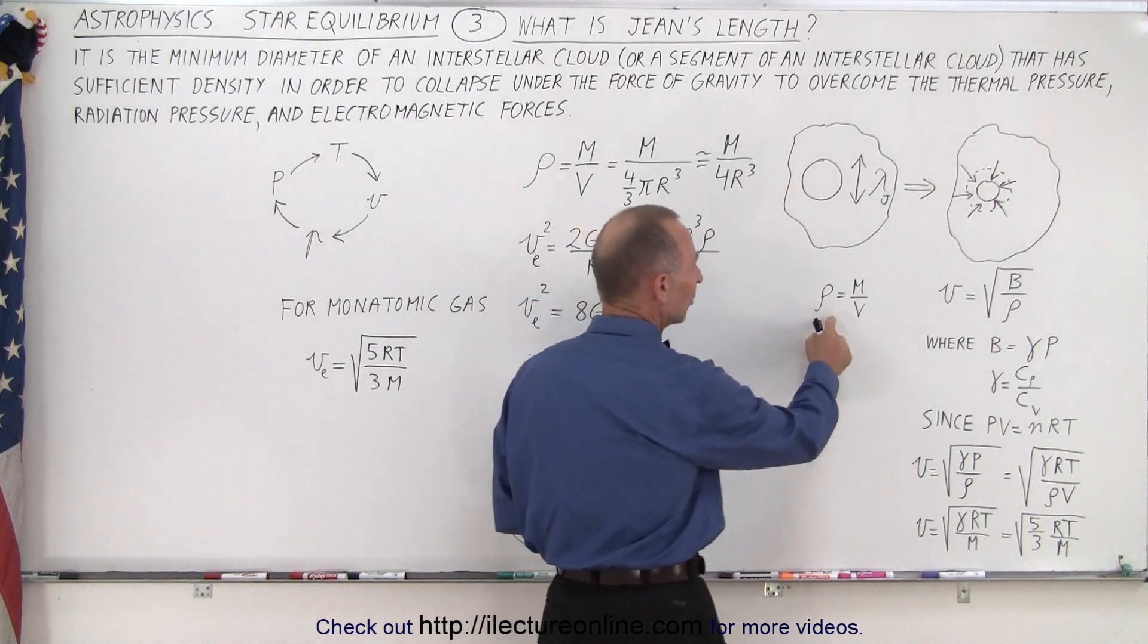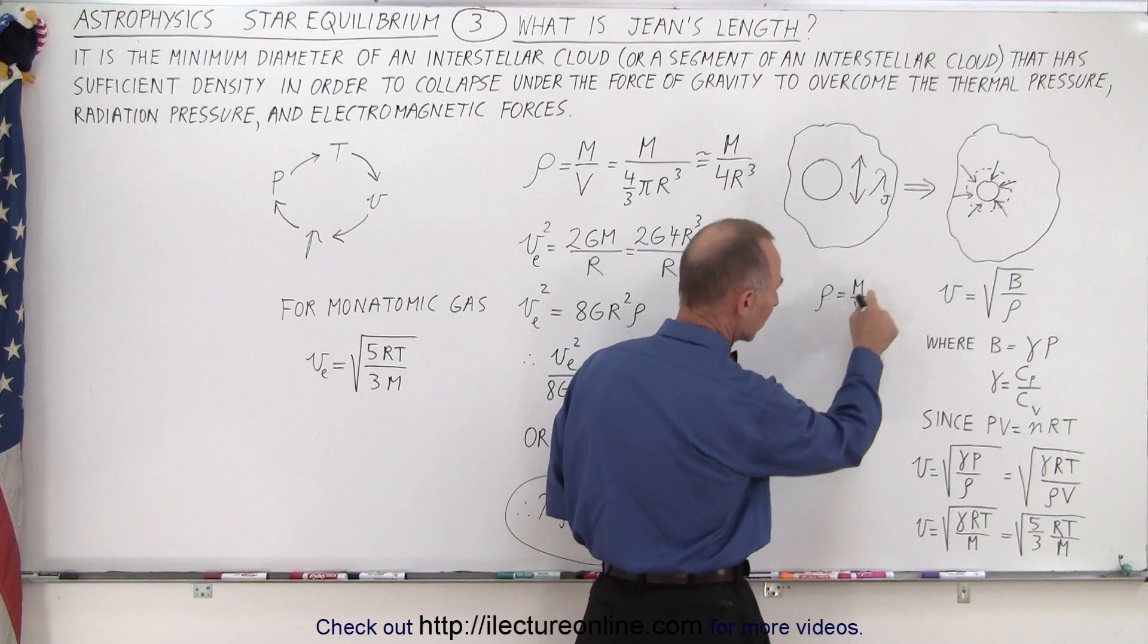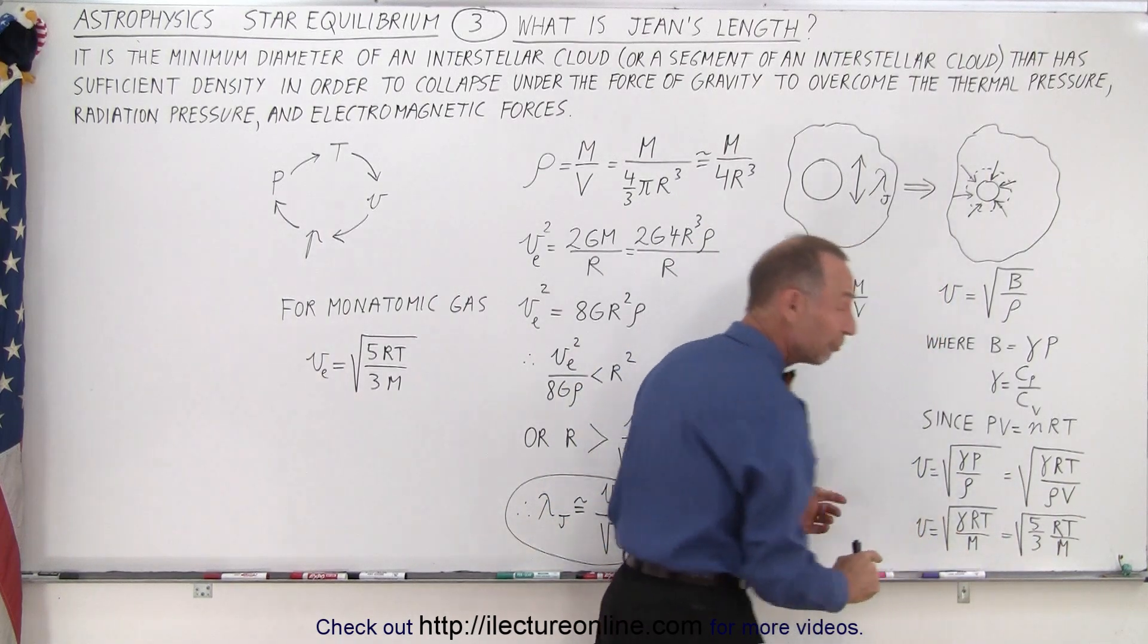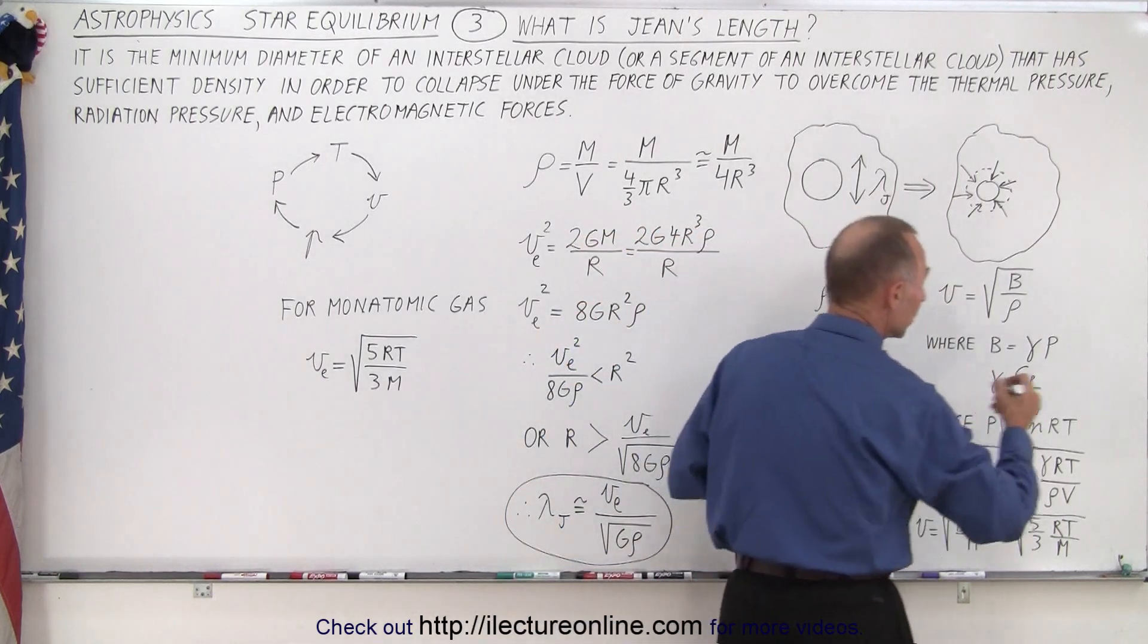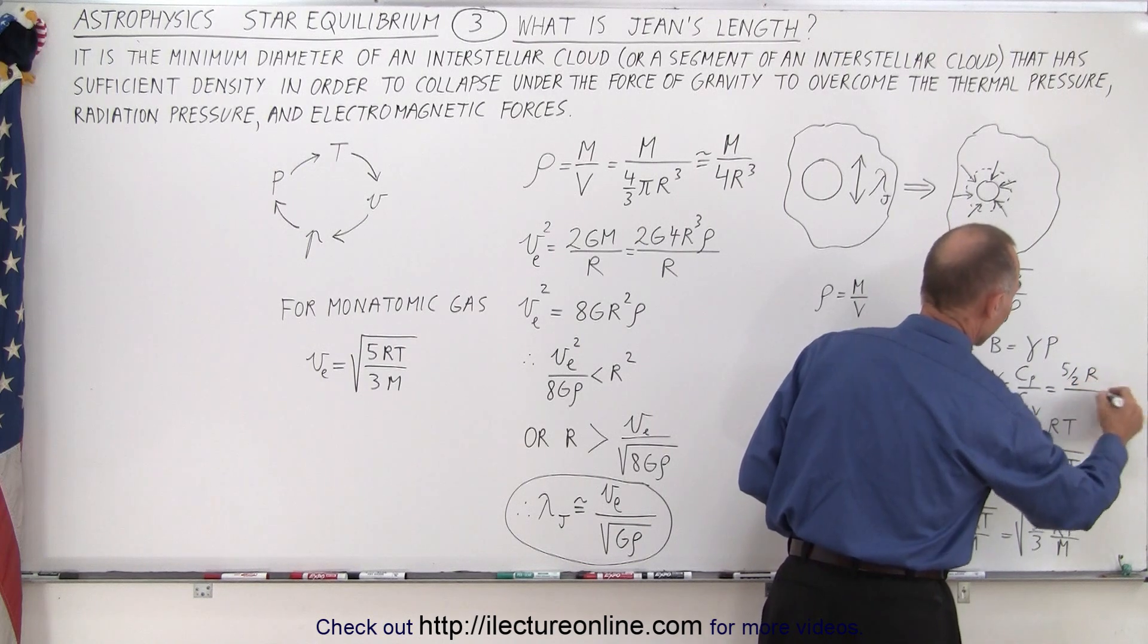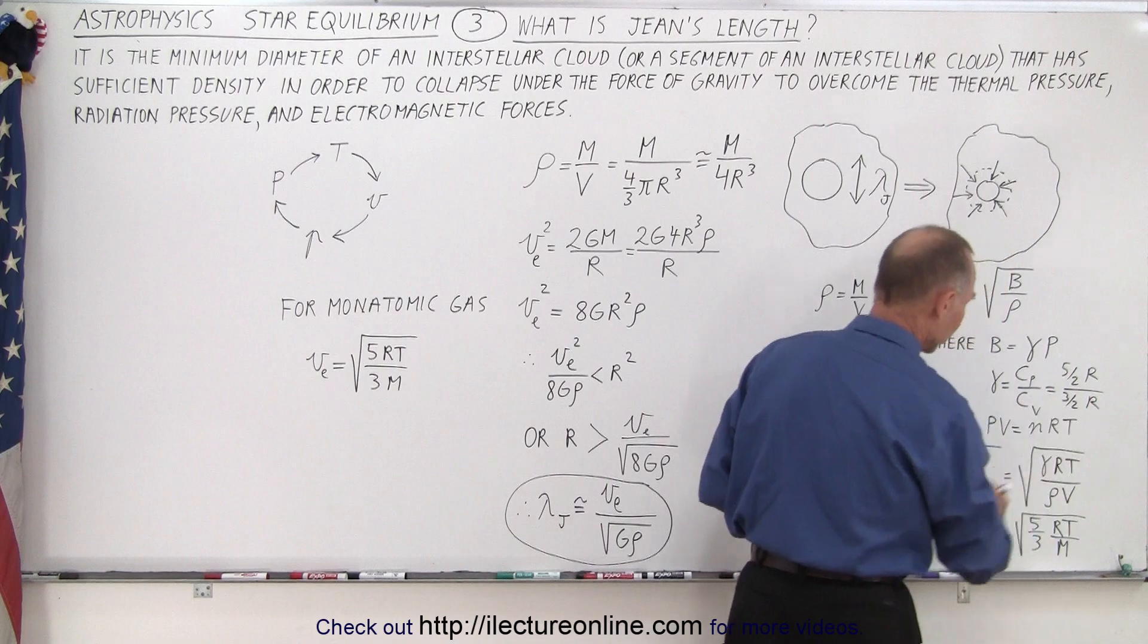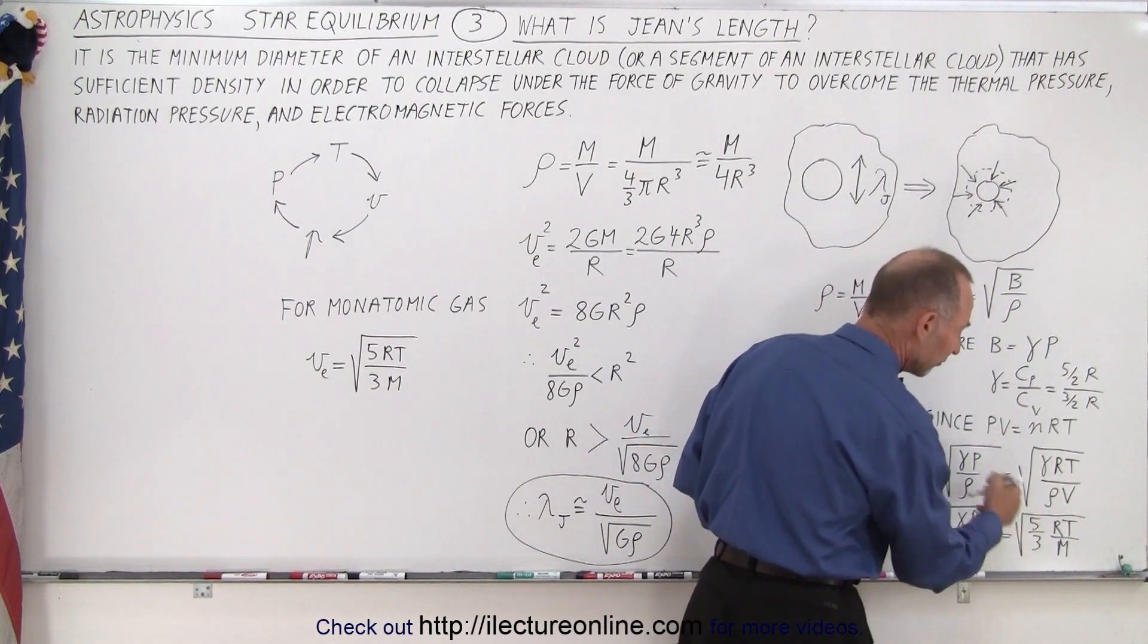Now going back to this, notice that density times volume equals the mass, so the denominator can be replaced by the mass. And for a monatomic gas, c sub p would be equal to 5 over 2 times the gas constant, c sub v is 3 over 2 times the gas constant, so you can see that for a monatomic gas that ratio will be equal to 5 over 3.